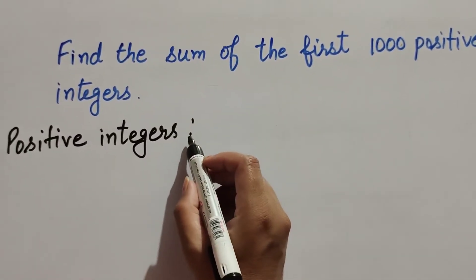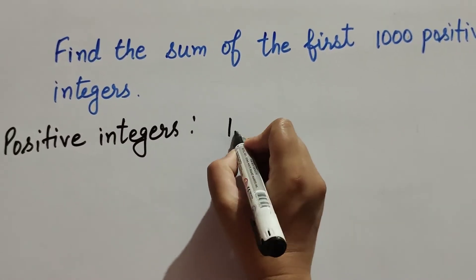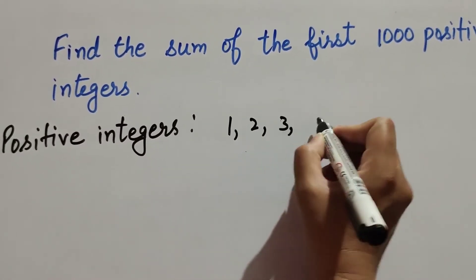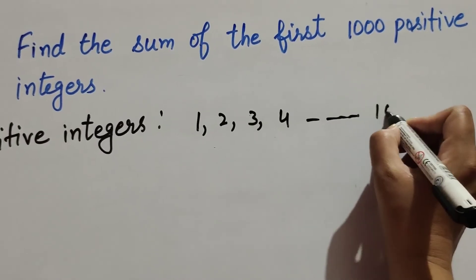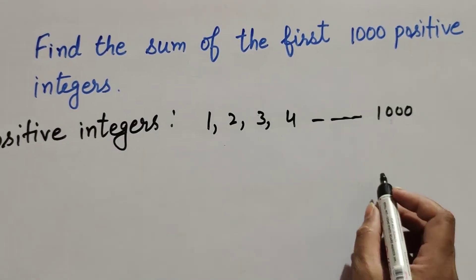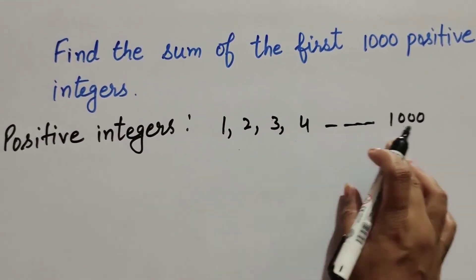So we know positive integers started from 1, 2, 3, 4 and up to so on thousand. We find the sum of thousand positive integers.